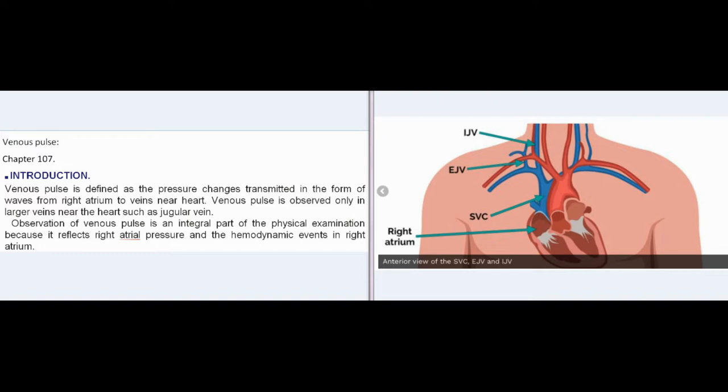Venous pulse is observed only in larger veins near the heart such as jugular vein. Observation of venous pulse is an integral part of the physical examination because it reflects right atrial pressure and the hemodynamic events in right atrium.